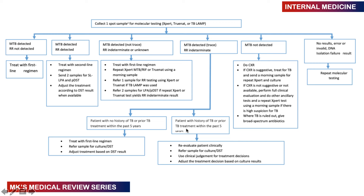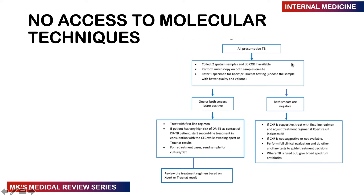If the patient has prior TB history or treatment within the past five years and rifampicin resistance is indeterminate, re-evaluate clinically, send for culture and drug sensitivity testing, and use best clinical judgment on whether to start treatment. If MTB is not detected but TB is still suspected, do a chest X-ray. If the X-ray is suggestive, treat for TB and send a morning sample for repeat GeneXpert and culture. If the X-ray is not suggestive, do ancillary tests and repeat GeneXpert. When TB is ruled out, give broad-spectrum antibiotics — it may be pneumonia or atypical pneumonia.